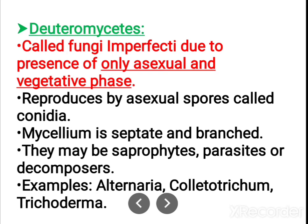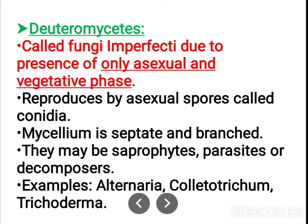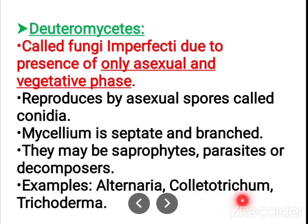Next is deuteromycetes, called fungi imperfecti. They are called fungi imperfecti due to the presence of only asexual and vegetative phases — no sexual phase is seen. When a sexual phase is present, fungi can be kept under phycomycetes, ascomycetes, or basidiomycetes. If there is no sexual phase, they are placed under deuteromycetes. The mycelium is septate and branched. They can be saprophytes, parasites, or decomposers. Examples include Alternaria, Colletotrichum, and Trichoderma.